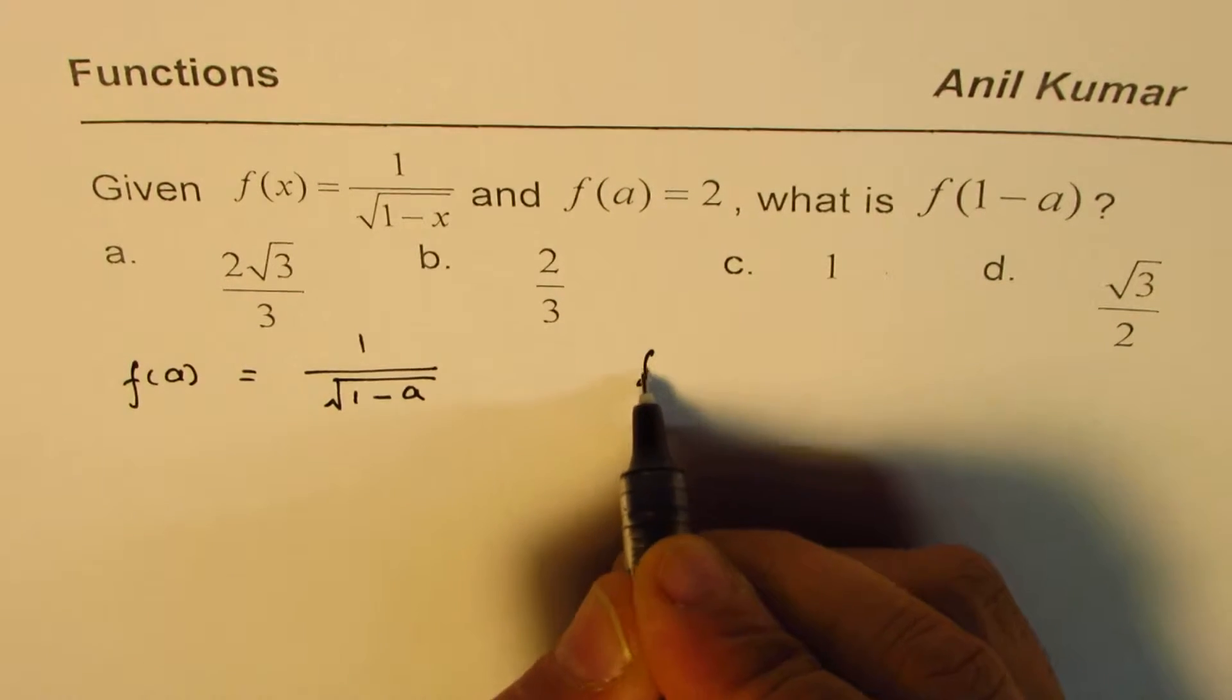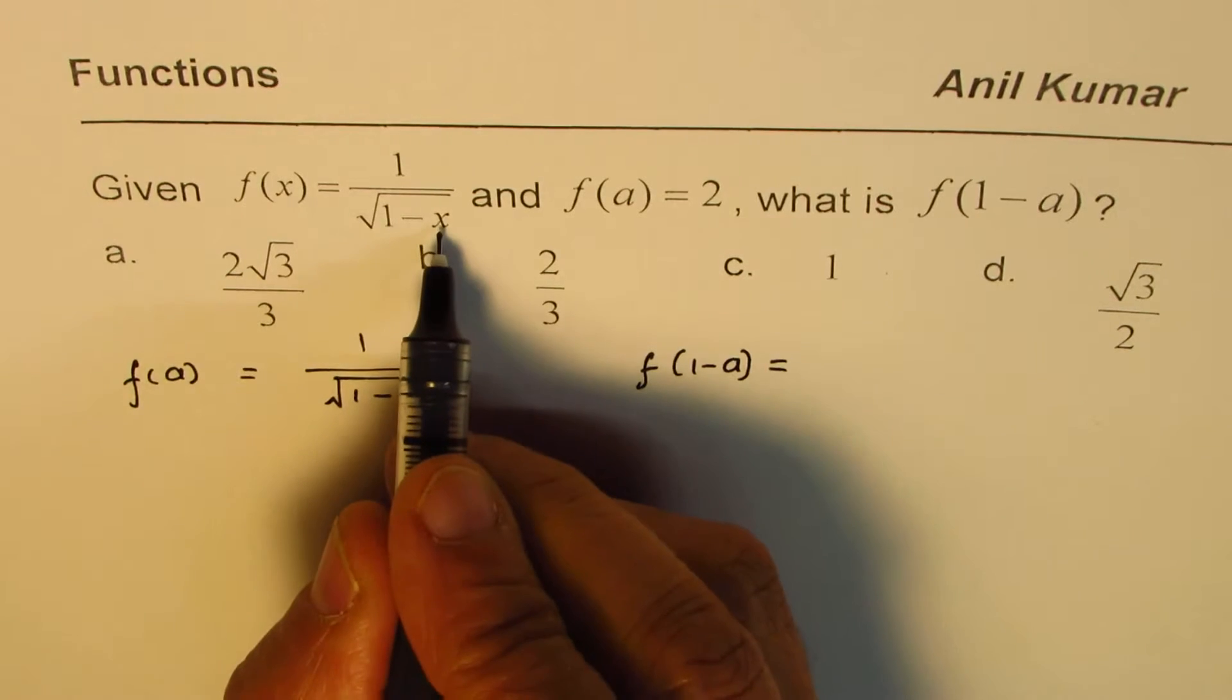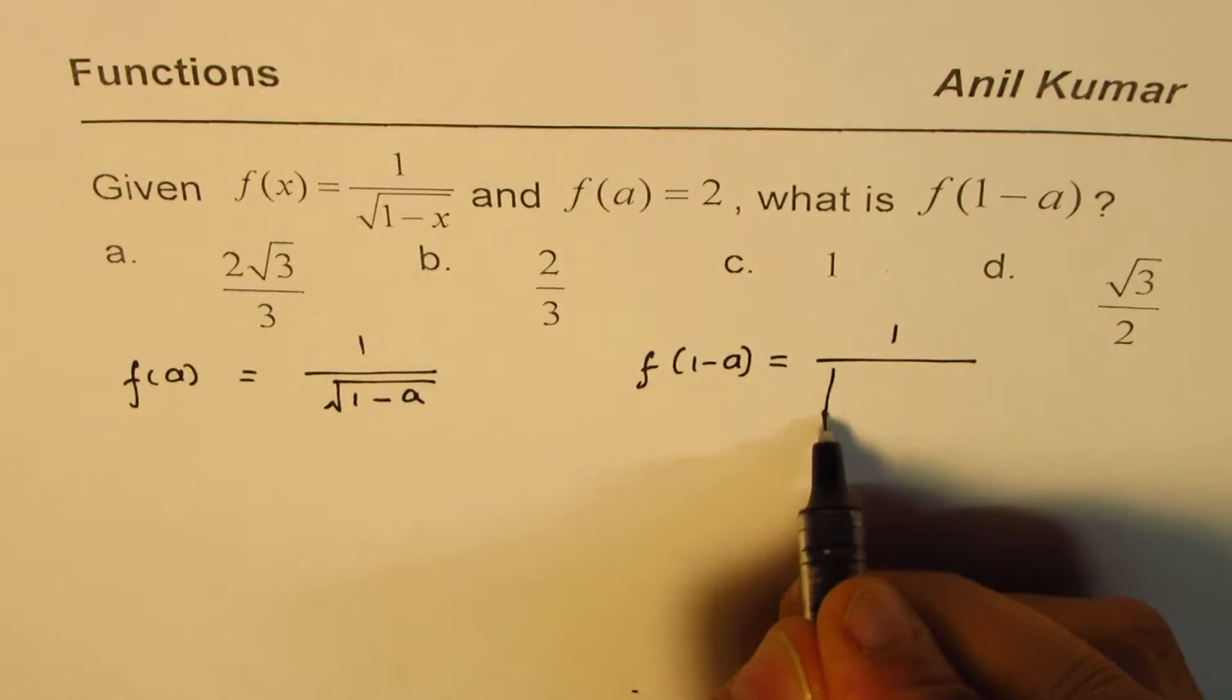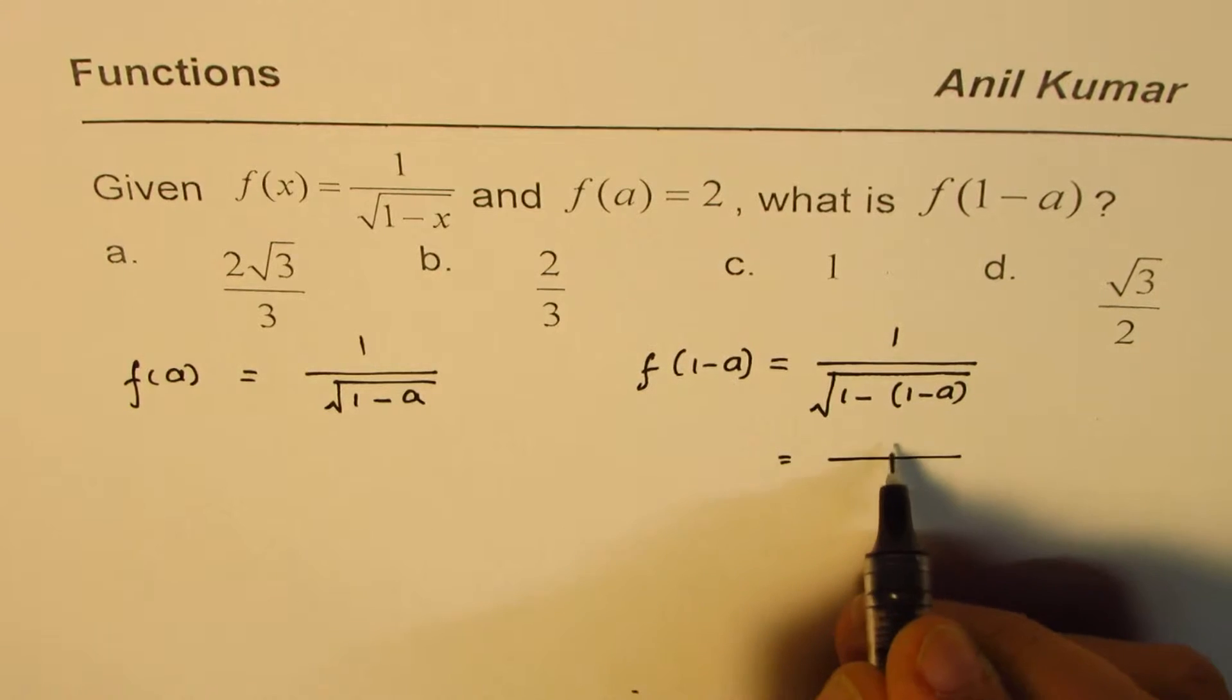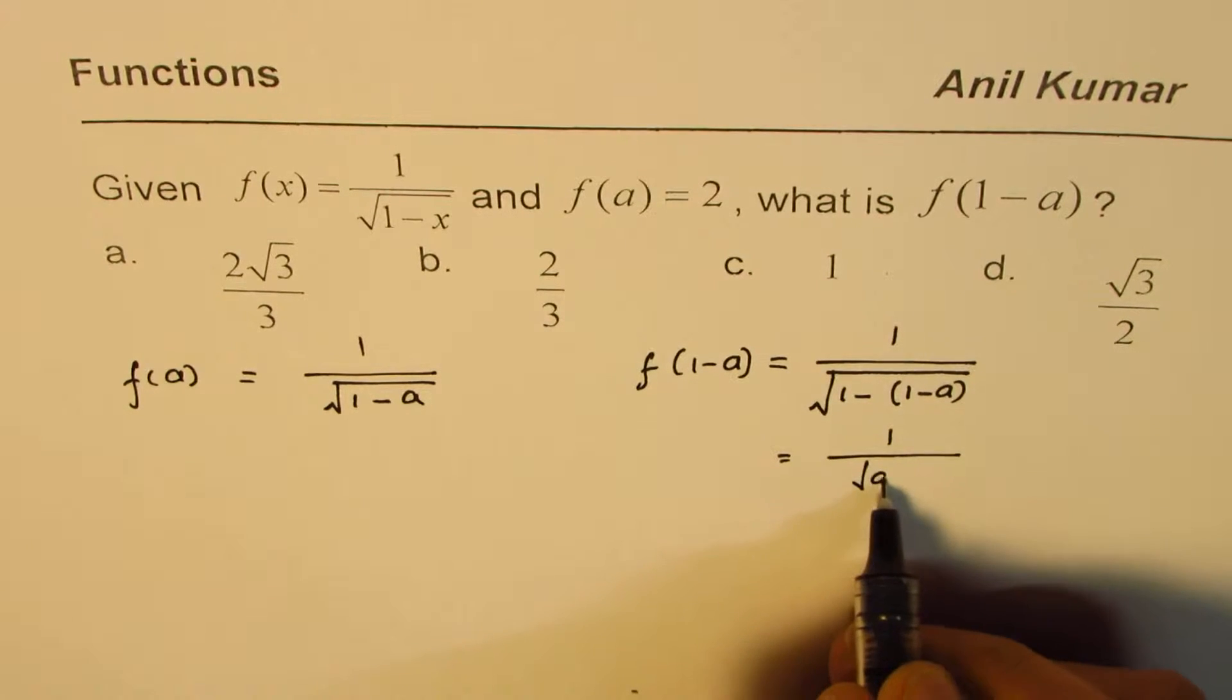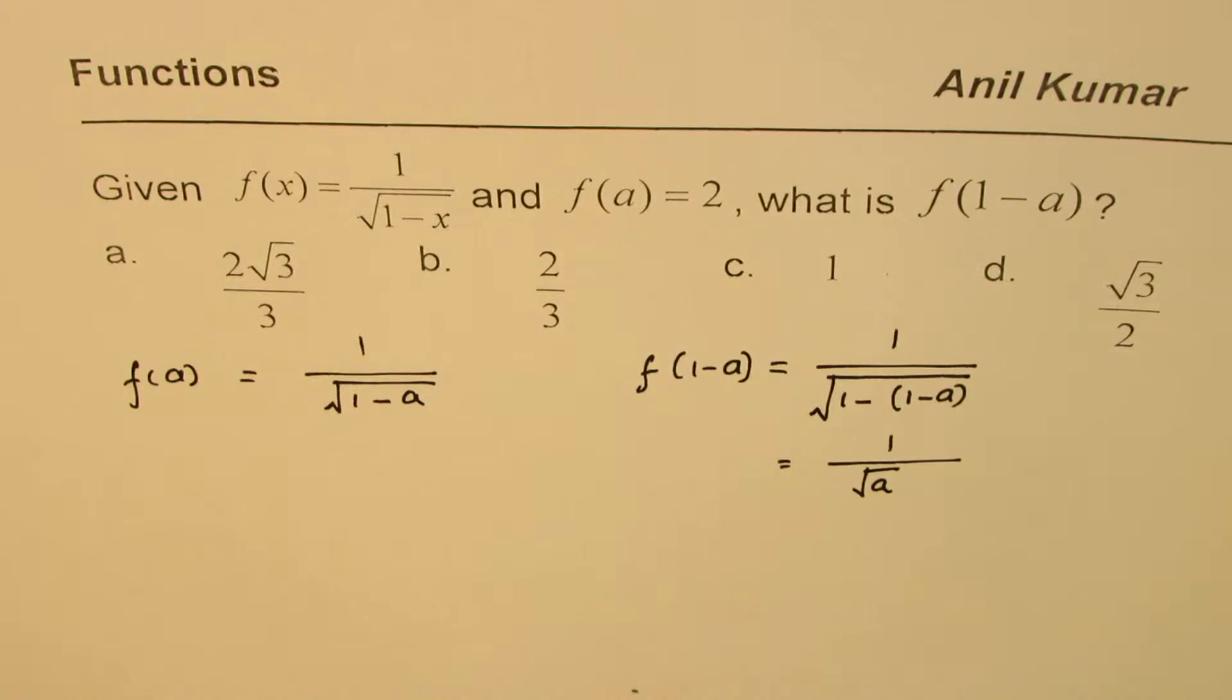How about f of 1 minus a? In that case, we have to replace x with 1 minus a. So, we'll get 1 over square root of 1 minus 1 minus a. Now, this is actually equals to 1 over, 1 minus 1 is 0 and minus minus a will give you square root of a. So, f of 1 minus a is 1 over square root a.